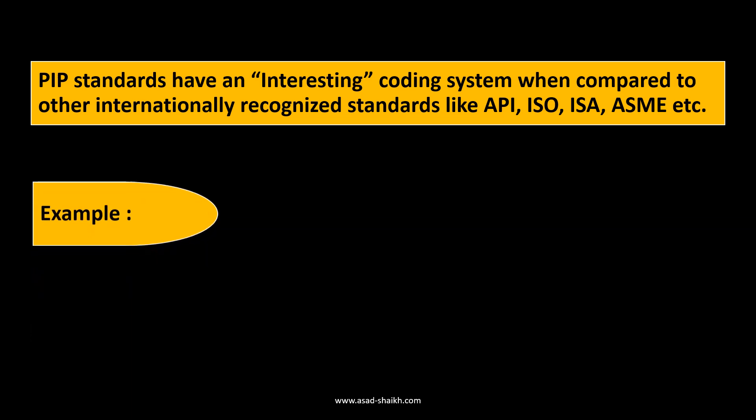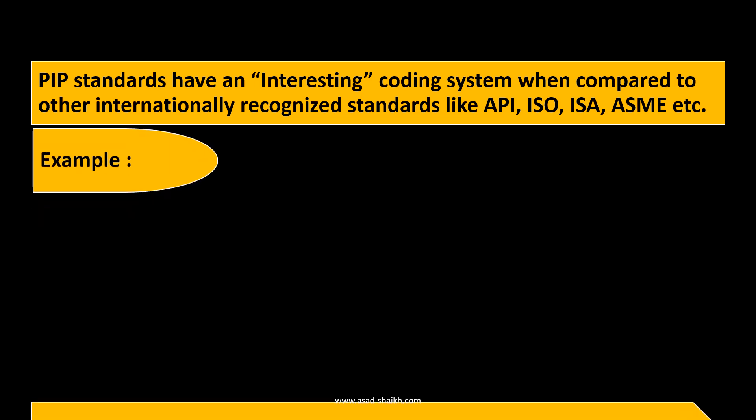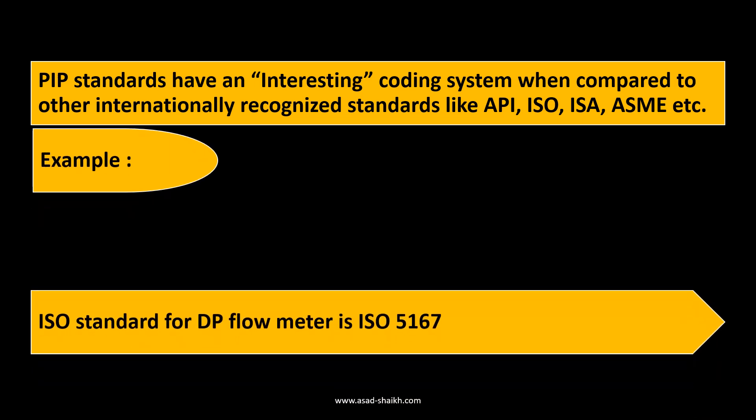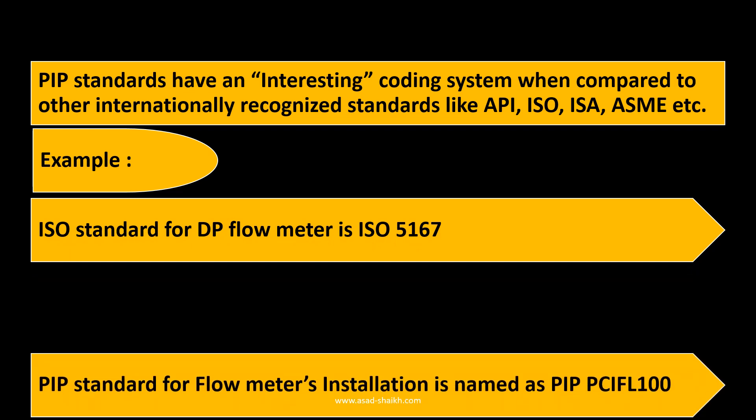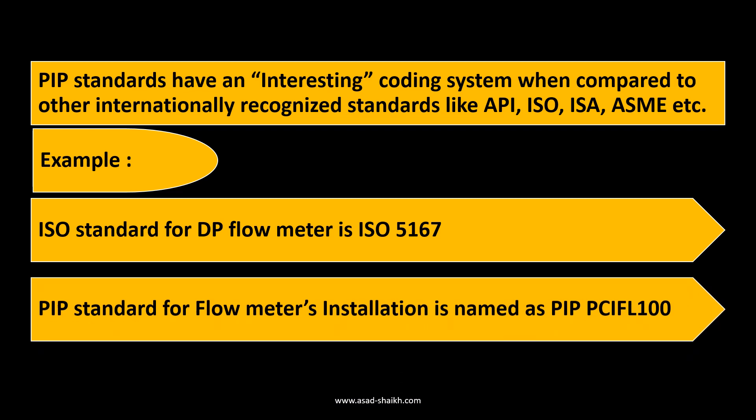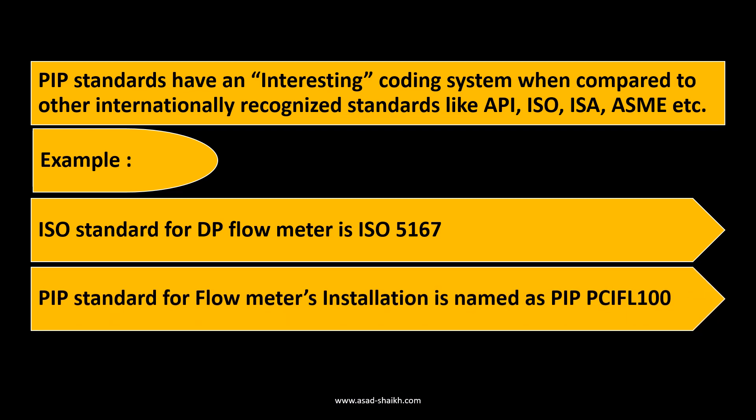Let's take an example. The ISO standard for DP flow meters is ISO 5167. However, if you look at a PIP standard — for example, flow meter installation — it's named PIP-TCIFL-100. Notice the difference: after the name of the standard, it has alphanumeric characters.